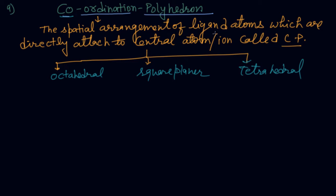The spatial arrangement of ligands, spatial means arrangement of atoms in space. Spatial arrangement of ligand atoms which are directly attached to the central atom or ion is called coordination polyhedron.